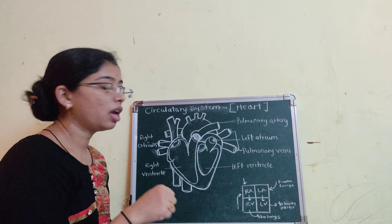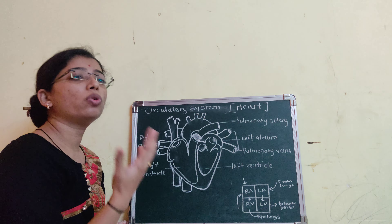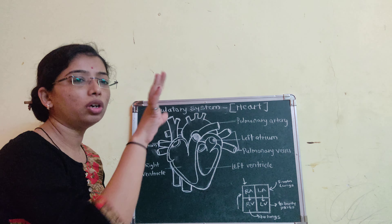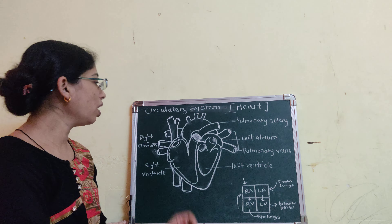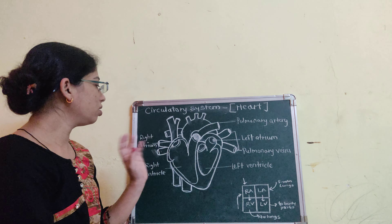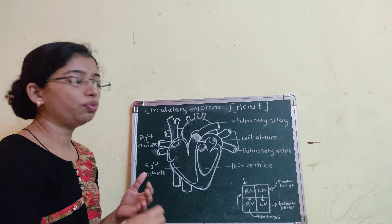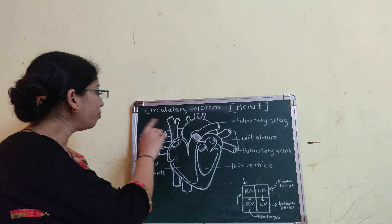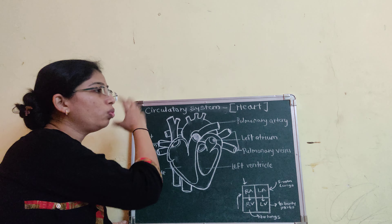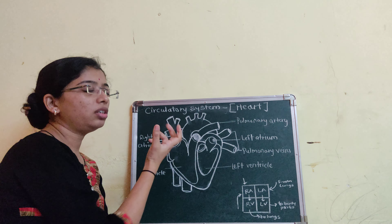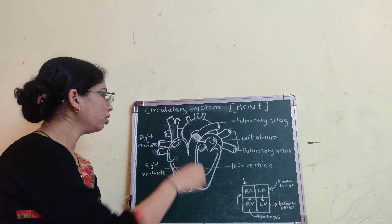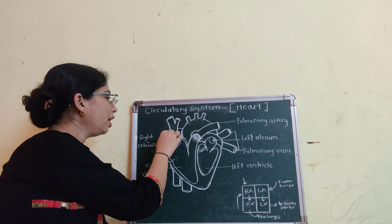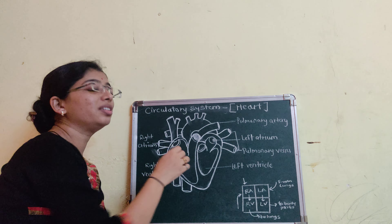Let's look at the working of the heart. How does the heart work? The heart is divided into four chambers: the atria and the ventricles. The atria are responsible for receiving blood from the body parts, and the ventricles are responsible for pumping blood out to the body parts.